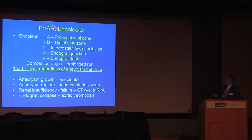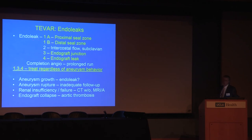When we look at endovascular repair in the thoracic aorta, the classification is the same: 1a is the proximal seal zone, 1b the distal seal zone, with intercostal flow, endograft junction, and endograft leak. You treat Types 1, 3, and 4. In the thoracic aorta, for some reason, it is very rare to see aneurysm enlargement from a Type 2 endoleak.